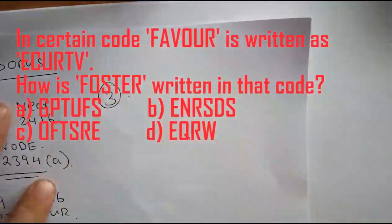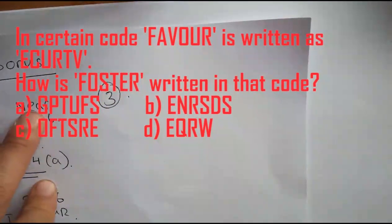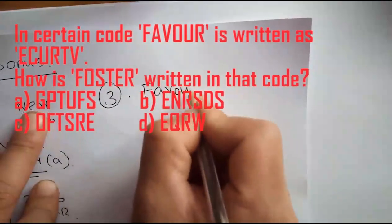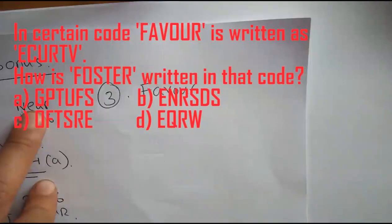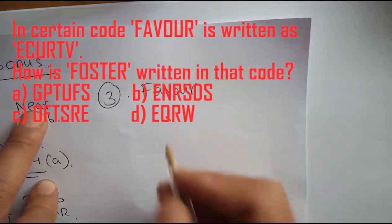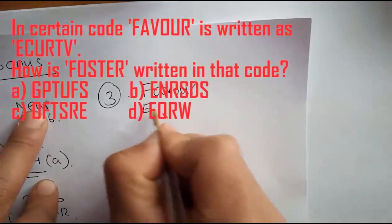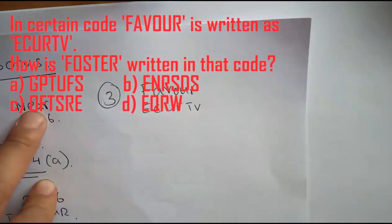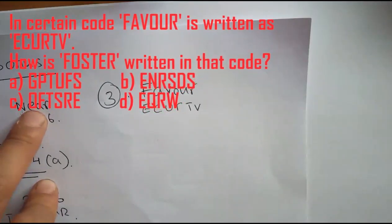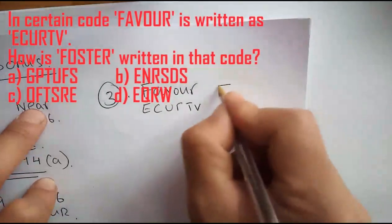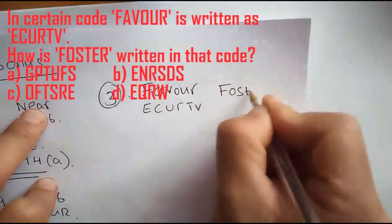The third and last bonus question: In a certain code, FAVOUR is written as E-C-U-R-T-V. How is FOSTER written in that code?